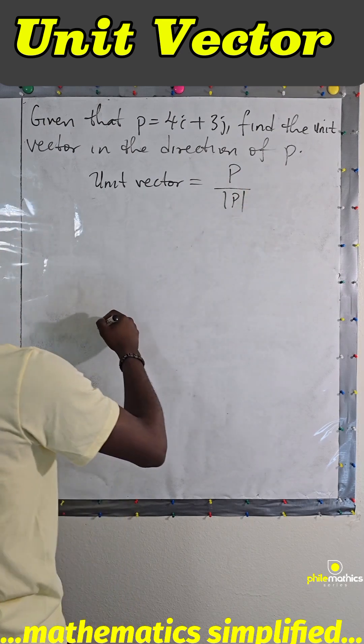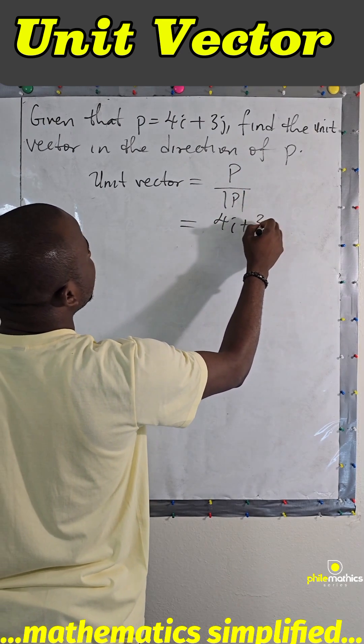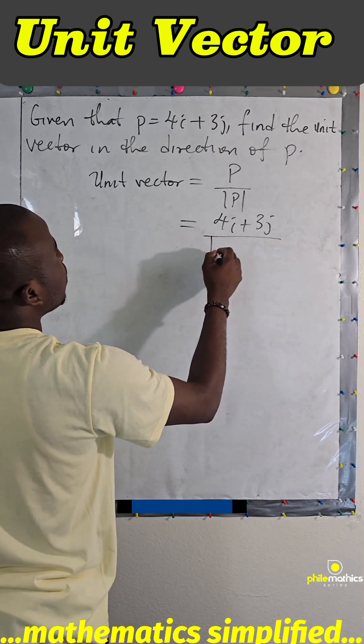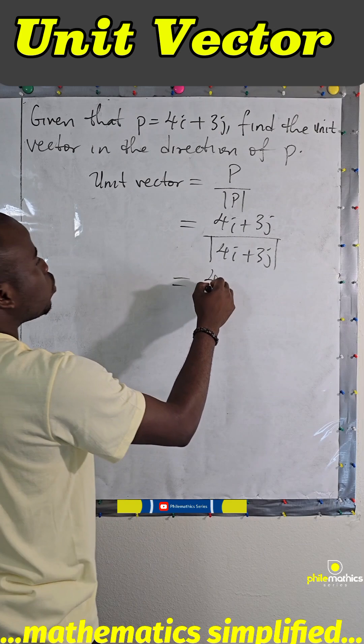The formula for unit vector for this will be p over its magnitude. So our p is 4i plus 3j. We take the magnitude of 4i plus 3j, and how we take magnitude...